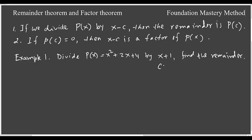What is my c? In this case, you can identify that c = -1 because you have x + 1, so you compare with x - c. Now just find P(-1). It will be (-1)² + 2(-1) + 4, so that gives you 1 - 2 + 4 which is 3.